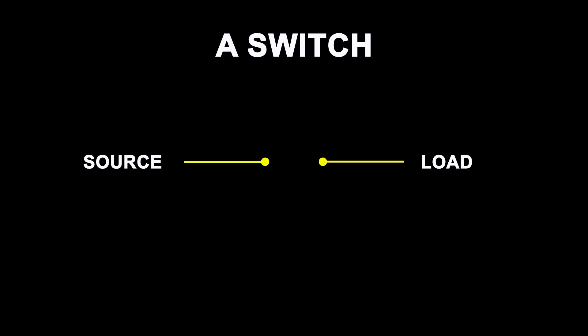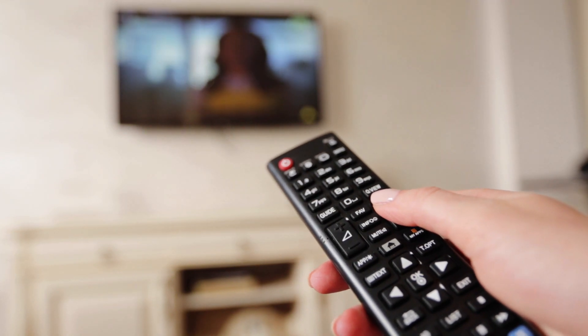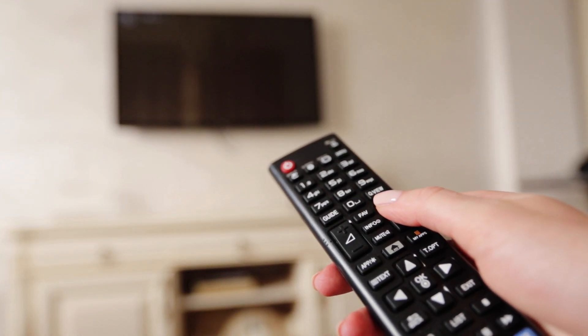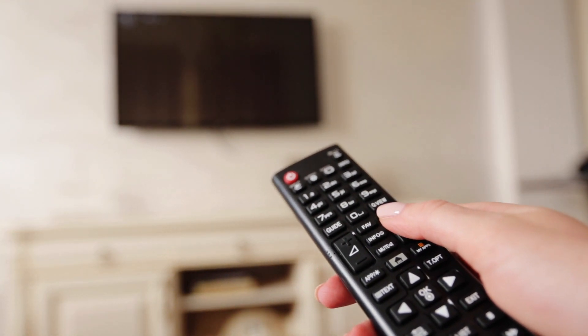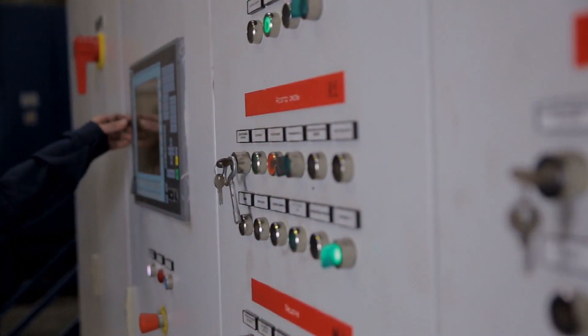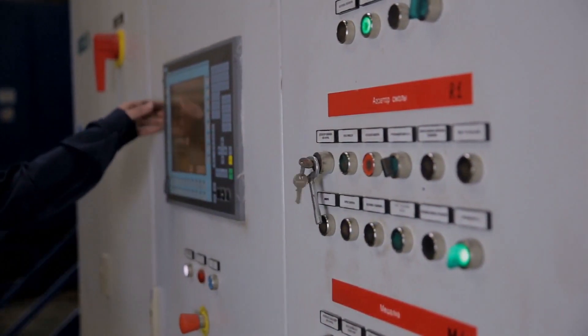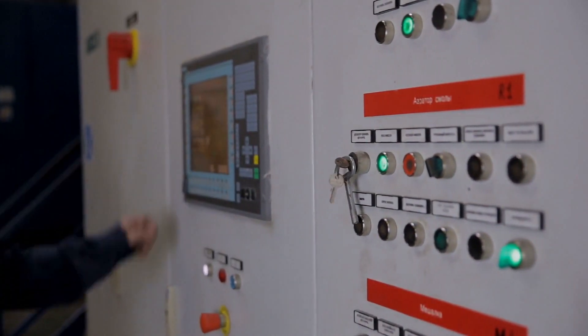A switch is basically a device which is designed to interrupt the current flow in a circuit — it can make or break an electrical circuit. Every electronic or electrical device uses at least one switch to perform an on or off operation, so switches are part of a control system and without switches the control operation of that device cannot be achieved.